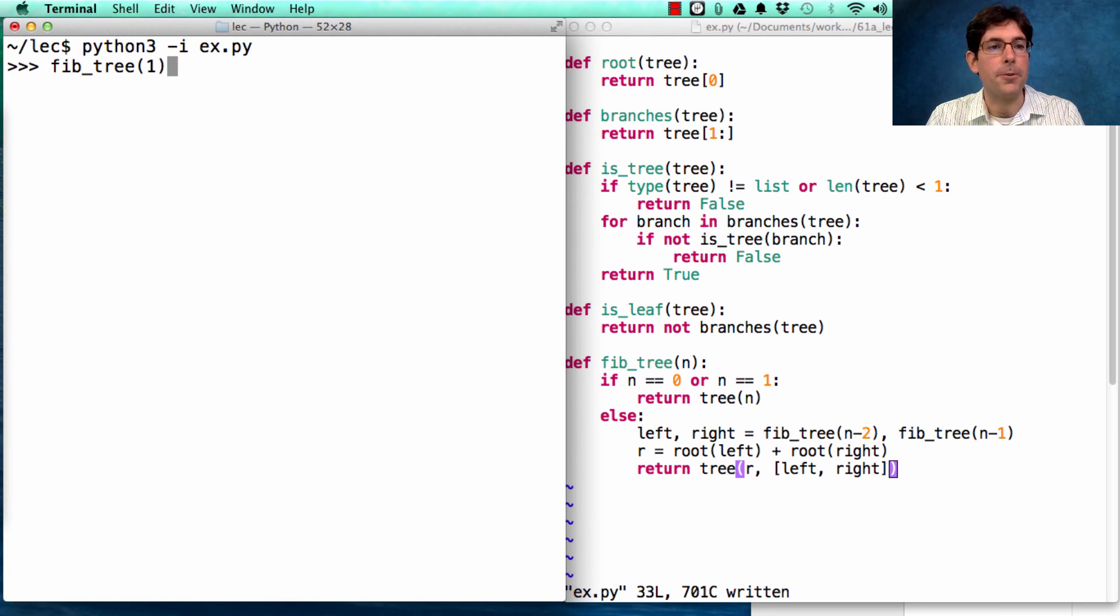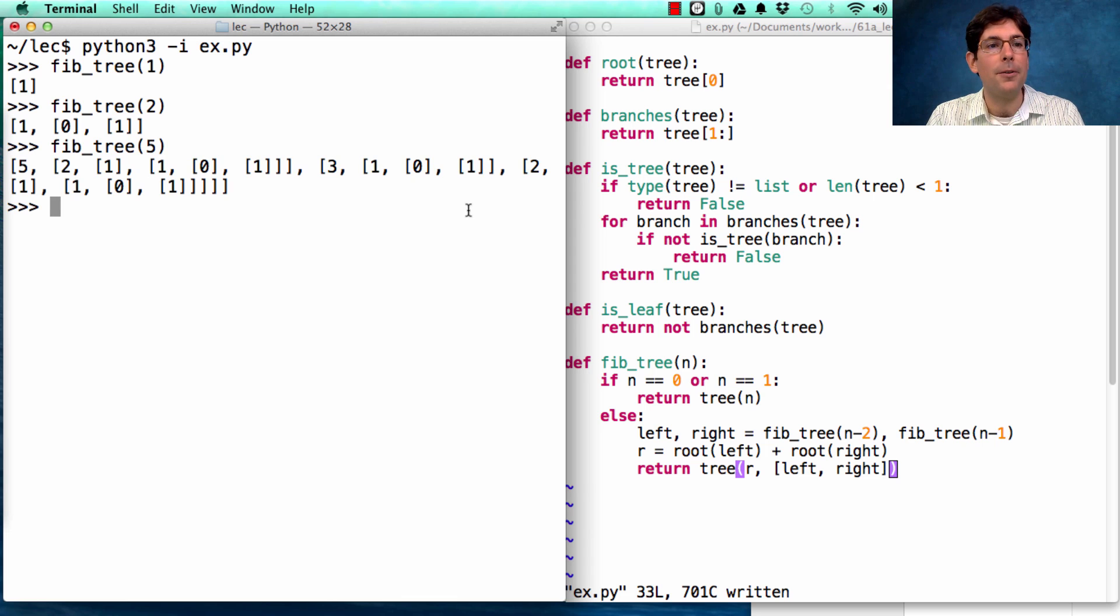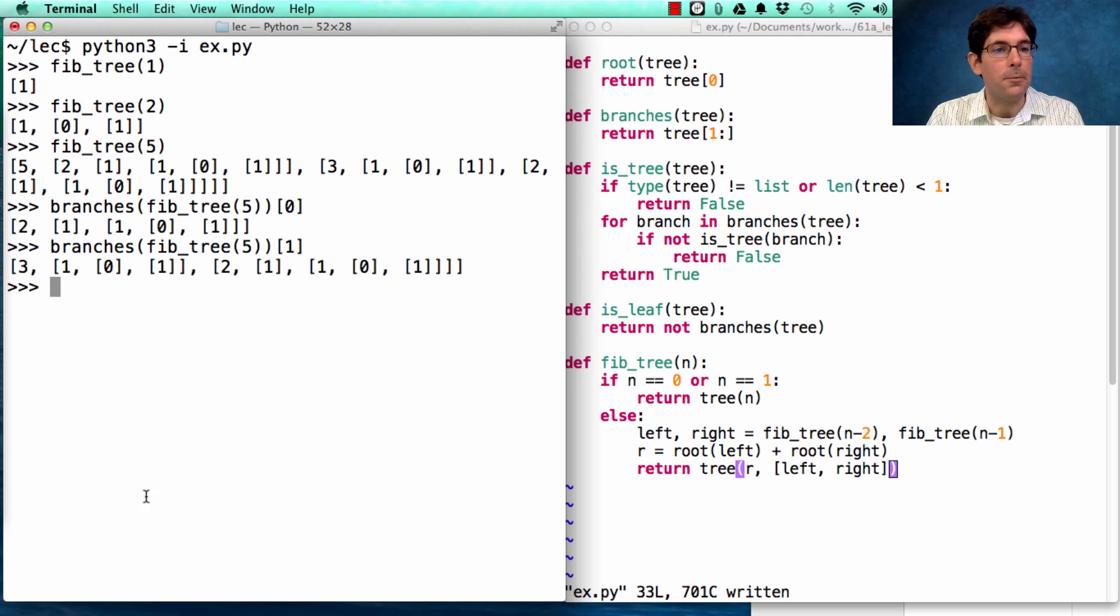So, the Fibonacci tree for just 1 contains 1. For 2, it contains 1 at the root, which is the Fibonacci number 2. And then the branches are what it's constructed of, 0 and 1. And then if I want to create the tree that I showed you at the beginning, well, then I'd call Fib tree on 5, which has, as a branch, Fib tree 3, which has 2 at the root, and also Fib tree 4, which has 3 at the root. And we see both of those branches in sequence. And then at the root, we have Fibonacci number 5, which is 5.